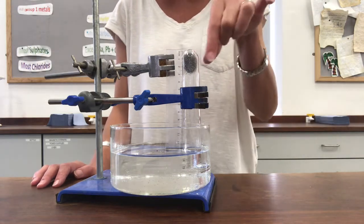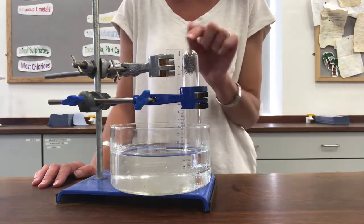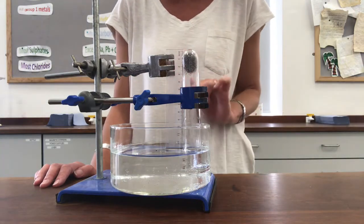As you can see, I've inverted it and put it into this dish that's got water in it. I've set up a ruler at the side here so I can measure how tall my bubble is, my air bubble that's inside there.